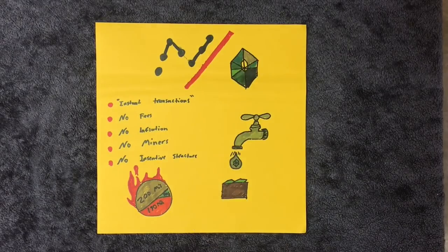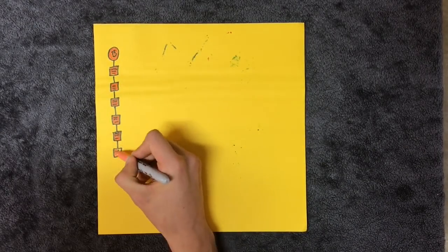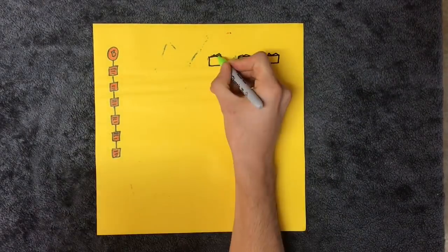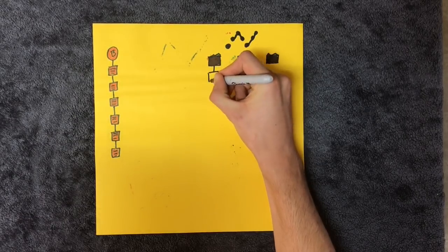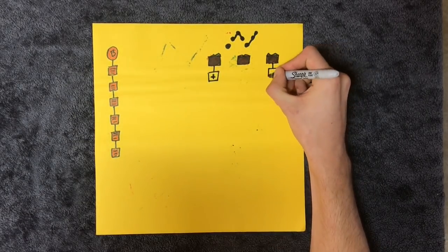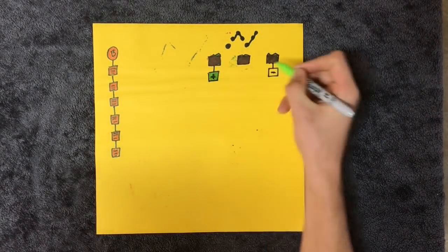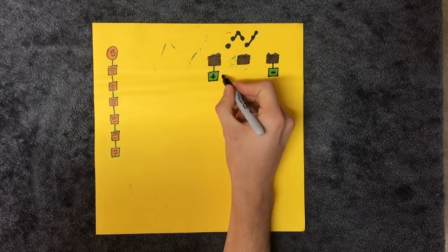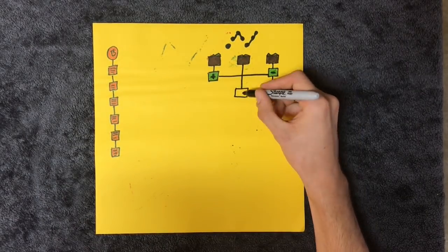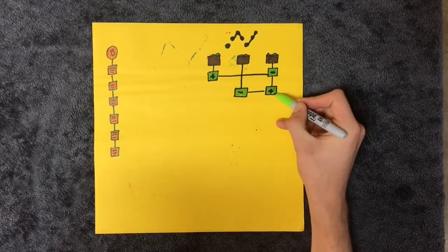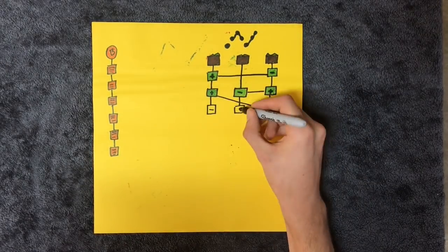Instead of a single universal blockchain, Nano uses a block lattice structure. Every wallet has their own personal blockchain. Your blockchain contains your entire transaction history, with each block containing only one single transaction. Every time a transaction is made, two new blocks are created. One on the sender's blockchain, and one on the recipient's blockchain. Being peer-to-peer, there is no need for transaction fees, since the only parties involved are the ones taking part in the transaction. And you also don't have to wait for anyone to place your transaction in a block.